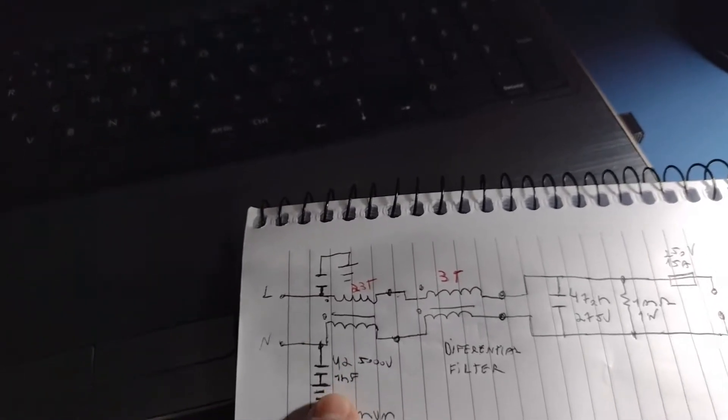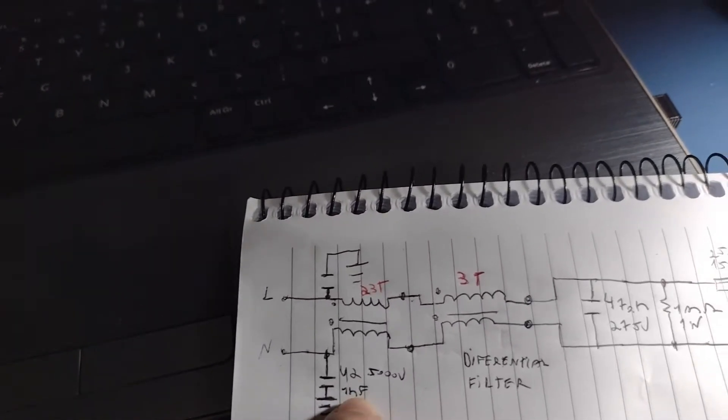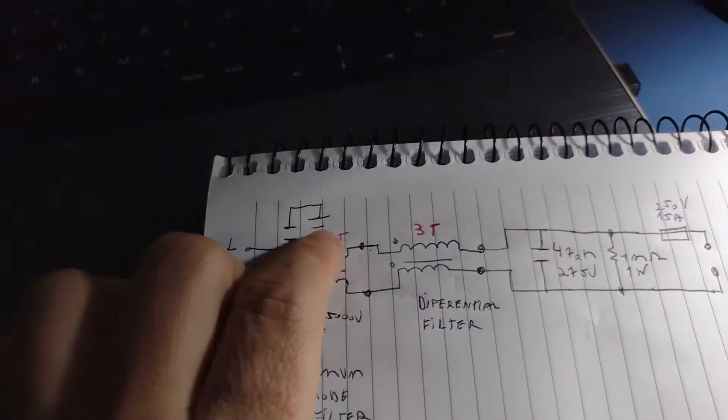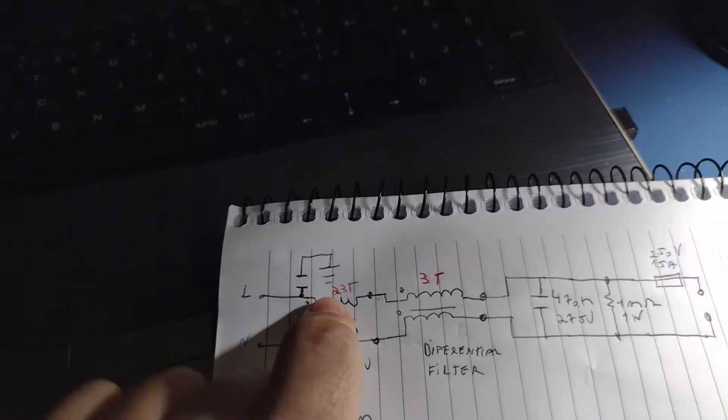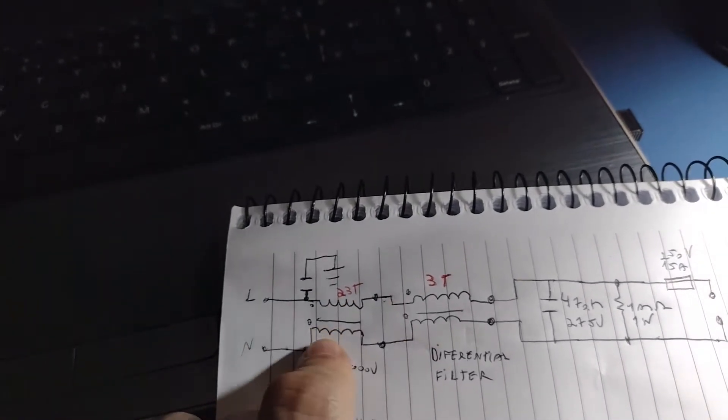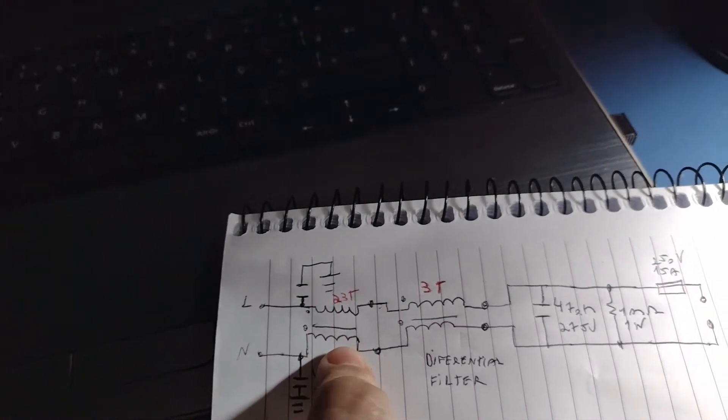The common mode filter is composed of 23 turns on one side and 23 turns on the other side.